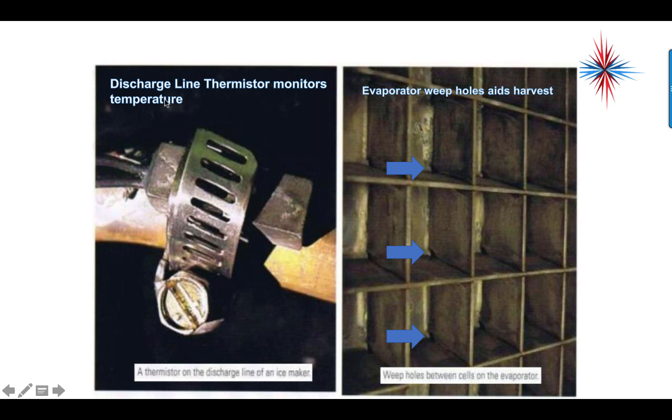The discharge line thermistor monitors the discharge temperature. That will actually, believe it or not, let us know when enough ice has built up on top of here. There's little weep holes in the back to allow water to run behind the cube as this starts going into harvest mode, because there's a little shaving of ice that will melt when that hot gas gets in here. But those weep holes allow enough water to pass through that it will actually help push the ice off and allow the ice to fall off in the harvest cycle.